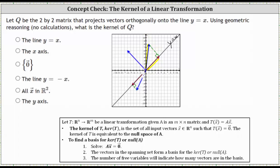Now let's consider the input vector (-3, -6), which is graphed here in blue. If this is projected orthogonally onto the line y equals x, the result or the output is this red vector here. Again, notice how the output vector is not the zero vector.